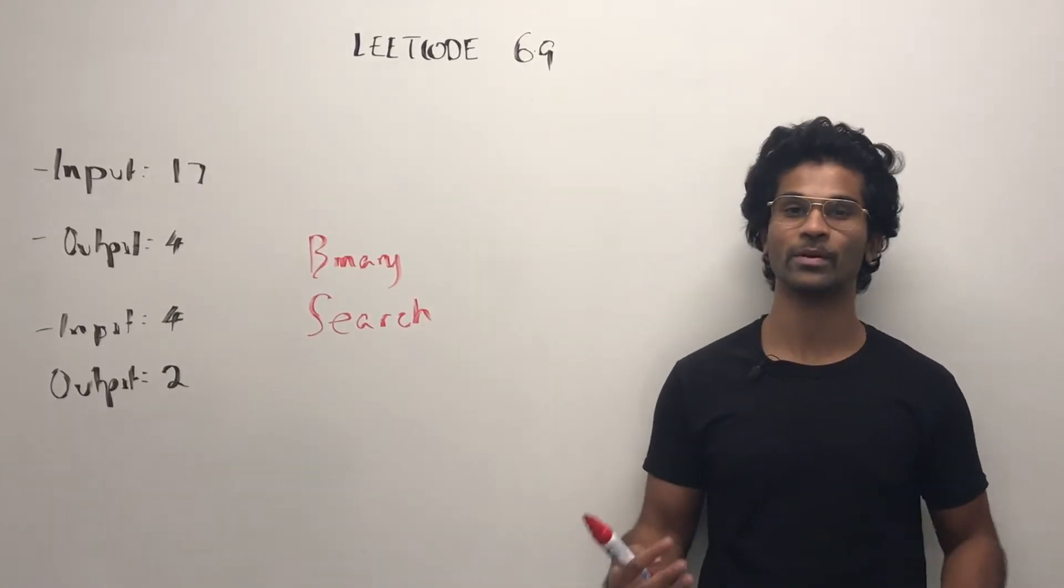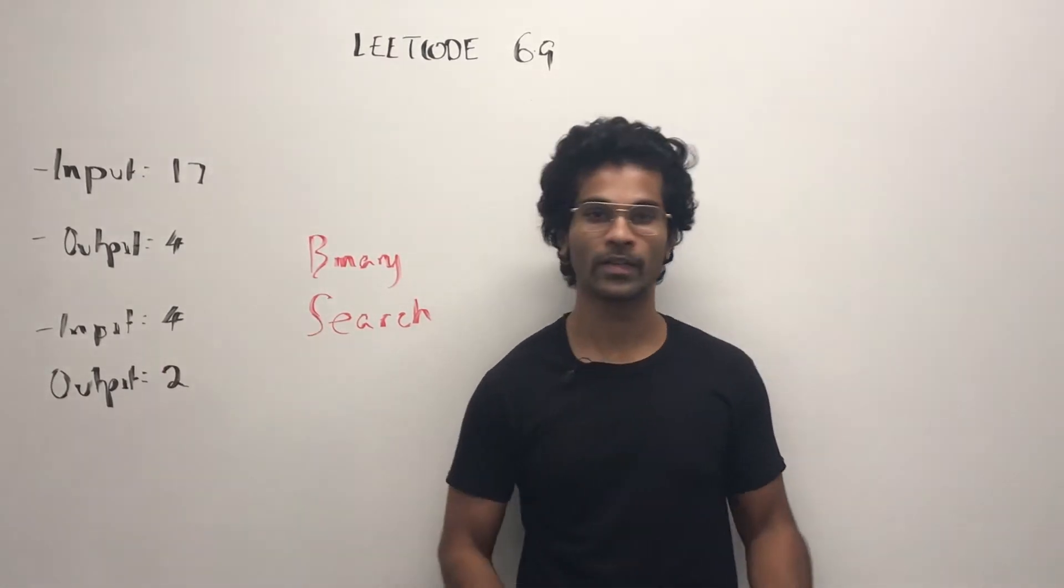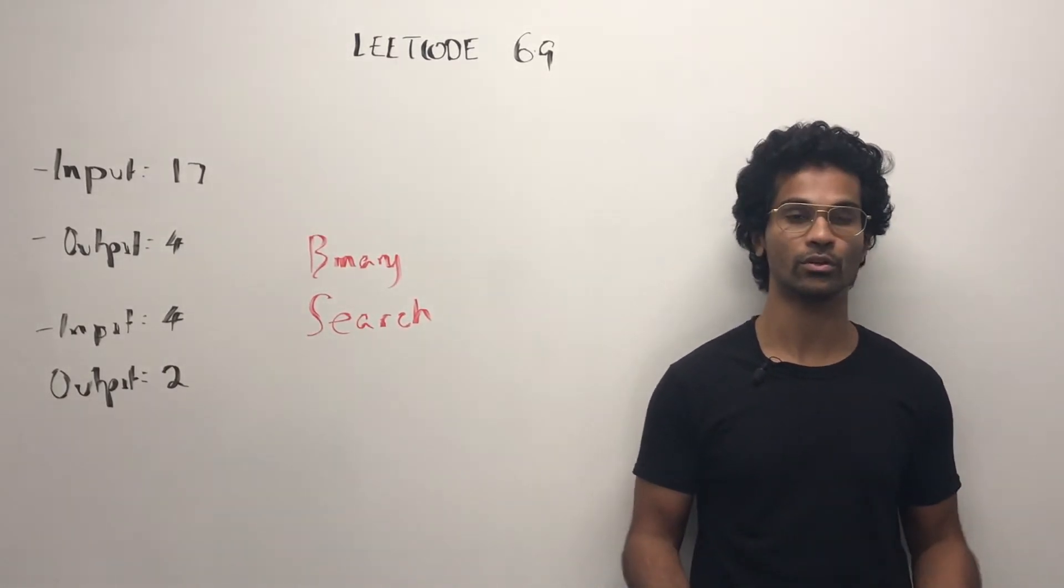The input is going to be a number, and the output is also going to be a number. If we have an input of say 4, that's simple. The square root is 2, we know that.